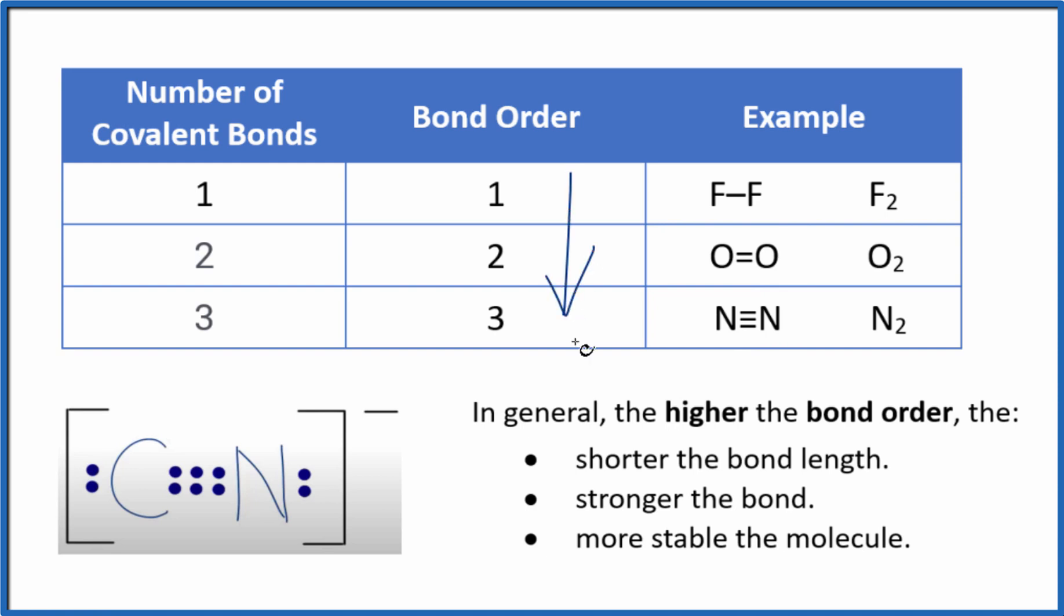And as we go down, as our bond order increases, the higher the bond order, the stronger the bond. So this triple bond would be stronger than a double bond and stronger than a single bond in general.